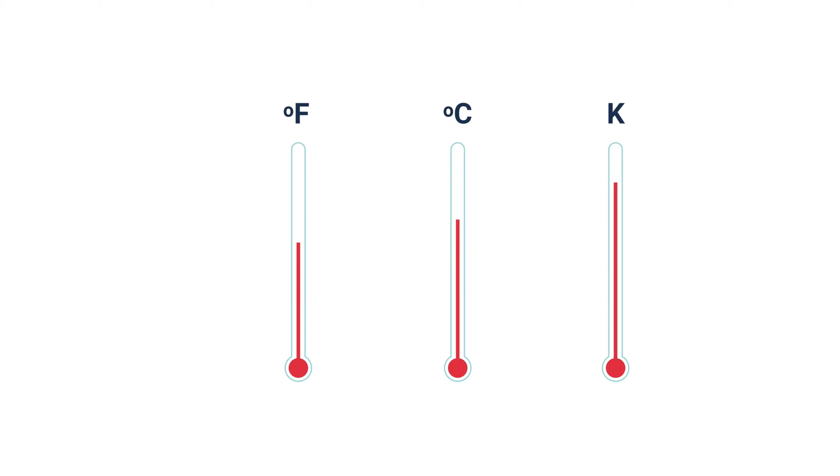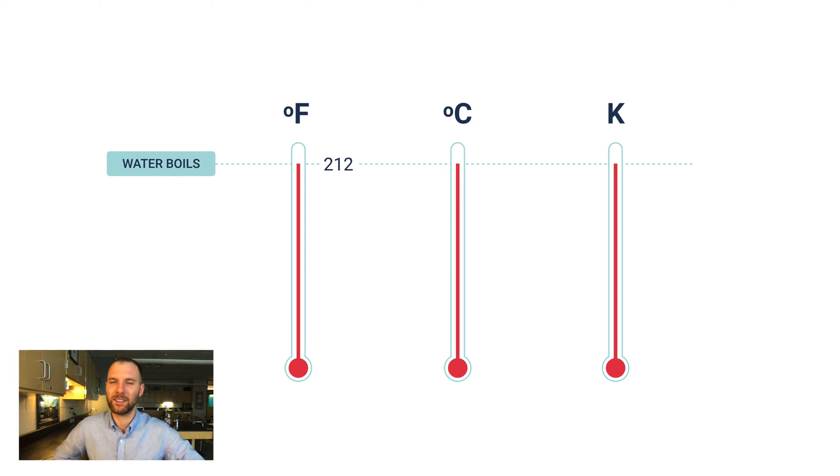There are three common scales of measuring temperature: Fahrenheit, Celsius, and Kelvin. At this temperature here, water boiling, do you know what temperature in Fahrenheit water boils at? It's 212 degrees Fahrenheit. It's kind of a strange number.